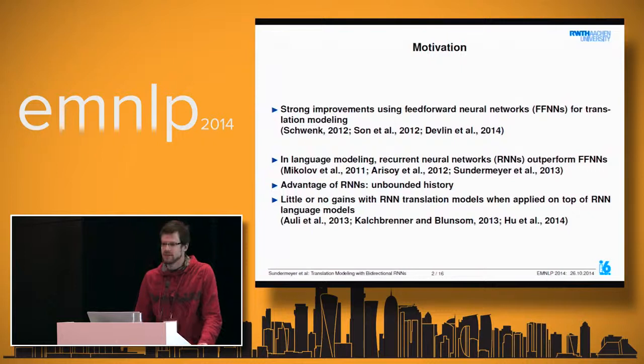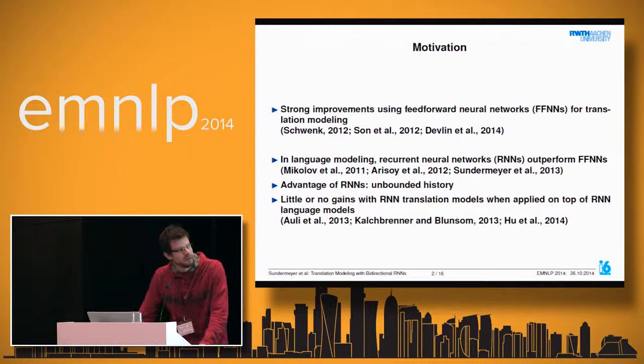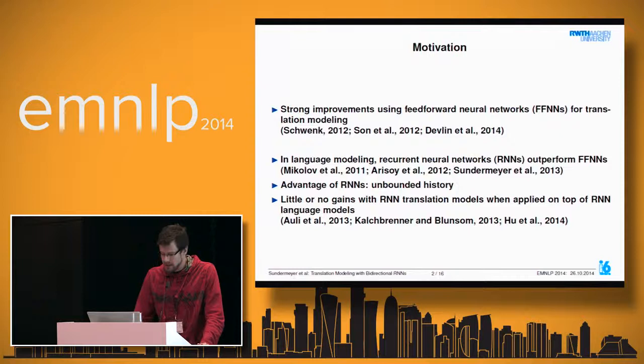Starting with a quick motivation: we have recently seen very good improvements using feedforward neural networks for translation modeling. Notable examples include papers by Holger Schwenk and, most notably, the paper at this year's ACL by Jacob Devlin. From language modeling, we know that recurrent neural networks can significantly outperform feedforward neural networks, both in terms of language model perplexity and word error rates for ASR systems.